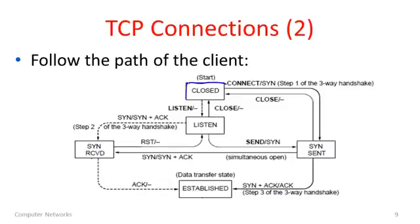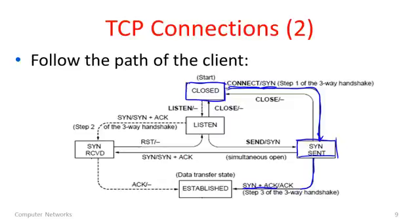The client starts in the closed state. It's the active party initiating the connection, so it calls connect. That takes us on the transition down to the SYN sent state, and as part of that the action is to send a SYN to the server. We're now in the SYN sent state waiting for something good to happen. The successful transition is triggered by receipt of a SYN-ACK from the other side — the server replying with its own SYN and acknowledging the client's SYN. In response, the client sends out its own ACK answering the SYN from the other side, and the client then proceeds to the established state.